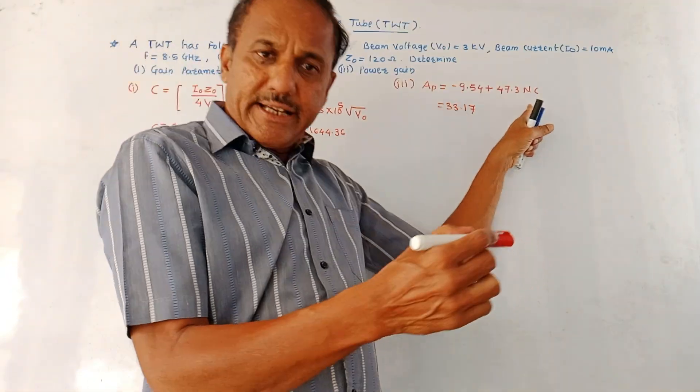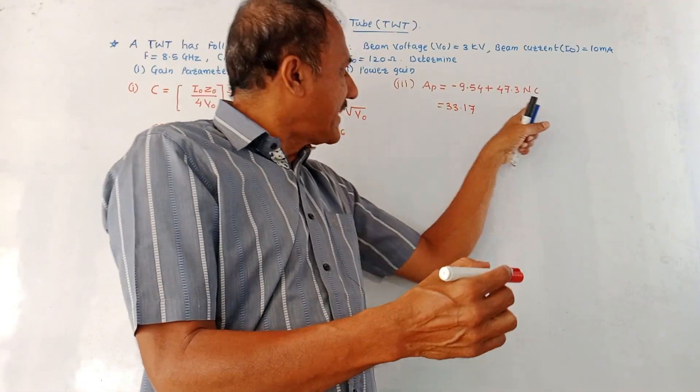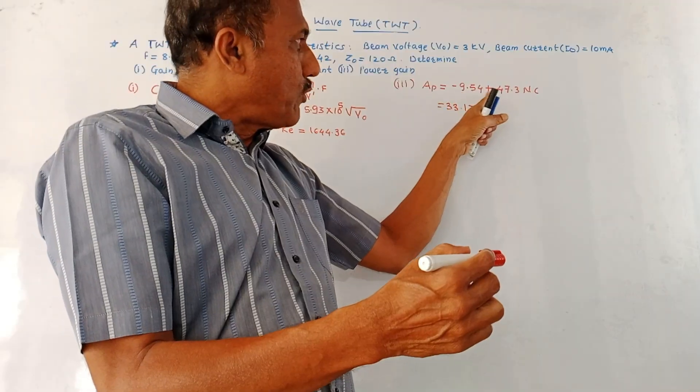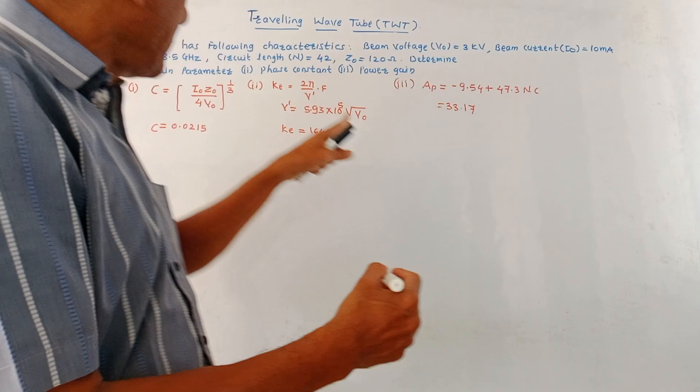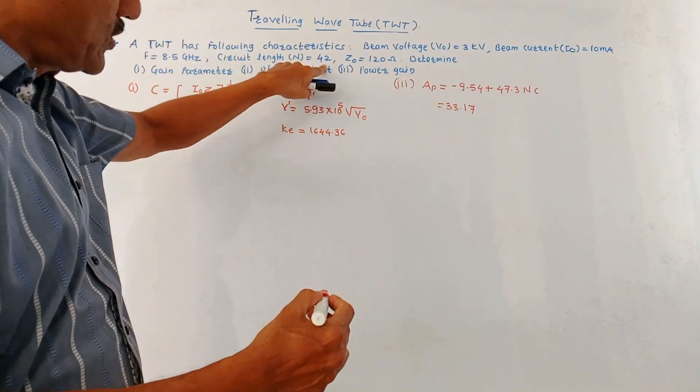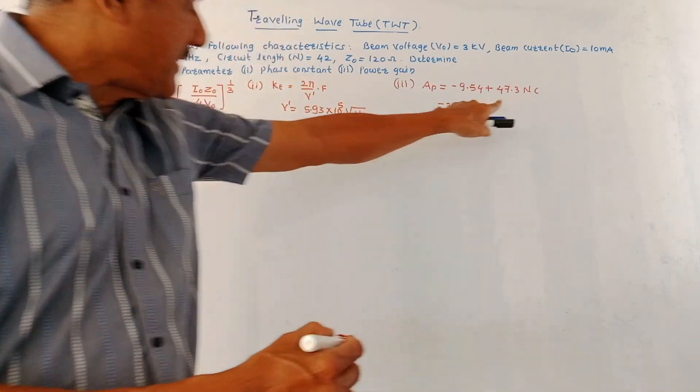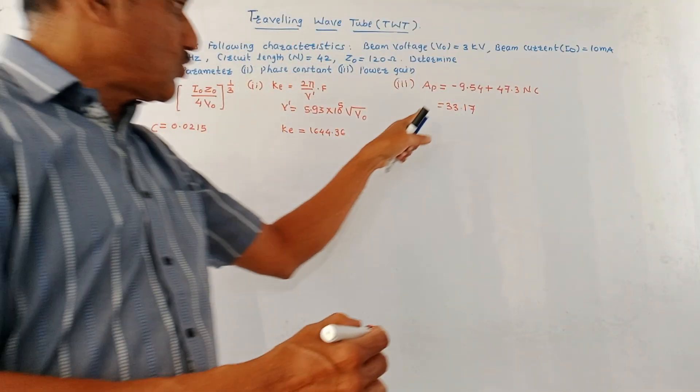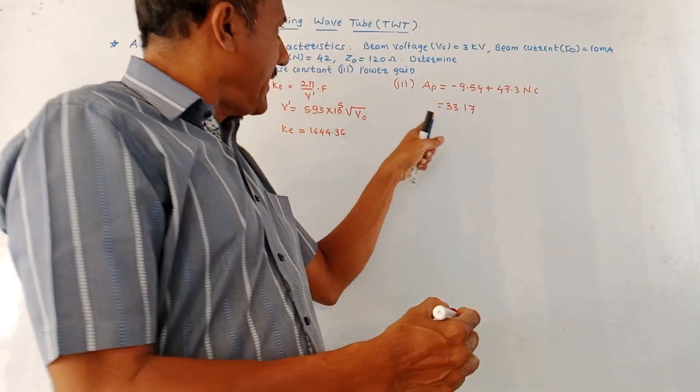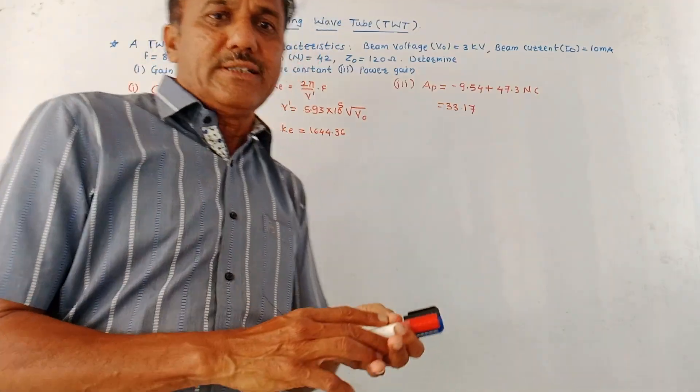Next is gain. This is again the standard formula to calculate the gain: minus 9.54 plus 47.3 N into C. N is the circuit length whose value is given in the question, which is 42. C is not speed of light in this case. It is the gain parameter, which is 0.0215. So answer of power gain is 33.17.